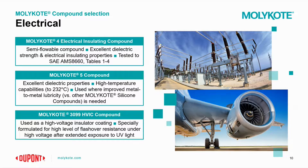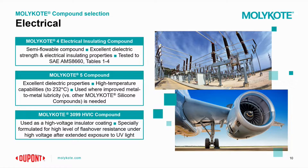On the electrical side, we have the Molykote 4 Electrical Insulating Compound, a semi-flowable compound with great dielectric strength, tested to SAE AMS 8660 tables one through four. The Molykote 5 compound is also excellent for dielectric properties and fantastic in high-current applications, with high temperature capabilities up to 232°C. If a compound recommendation is needed for metal-to-metal use, the Molykote 5 has improved metal-to-metal performance over the others. The Molykote 3099 HVIC compound is a high-voltage compound especially formulated for flashover resistance, maintaining its properties for extended periods even when exposed to UV light.